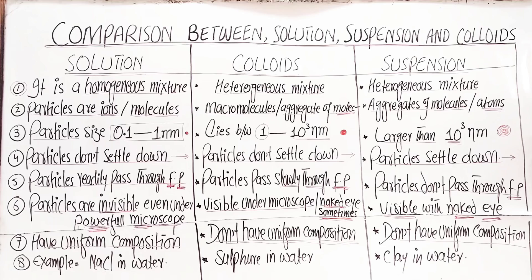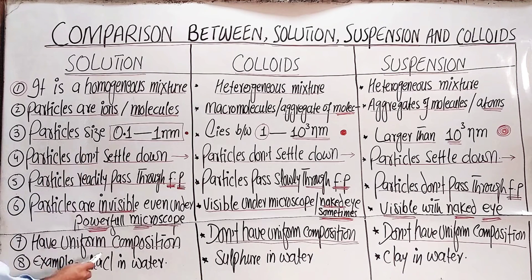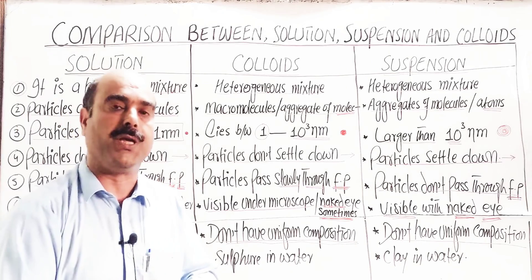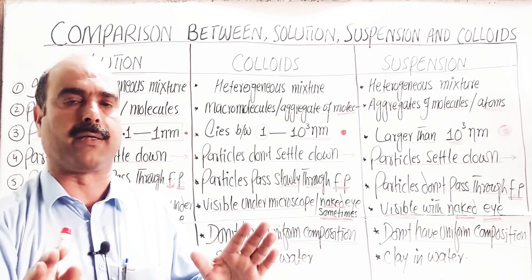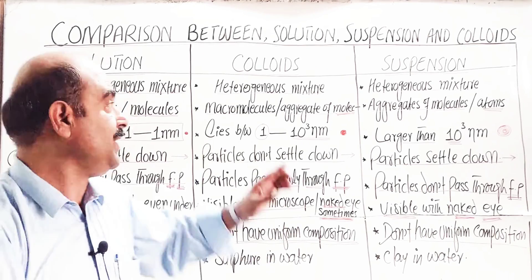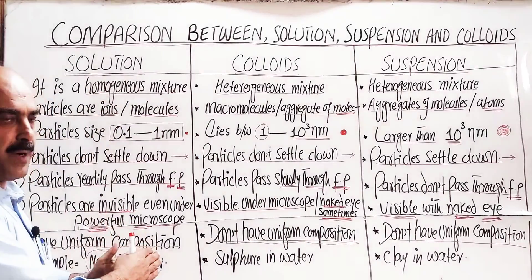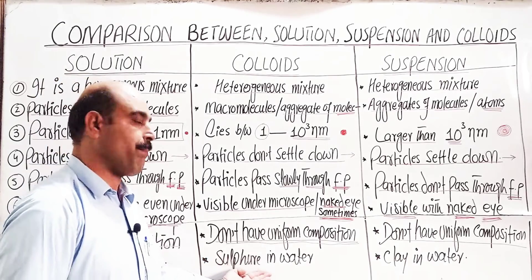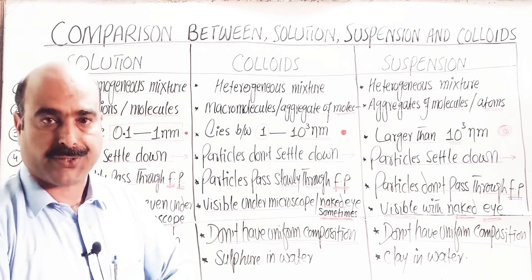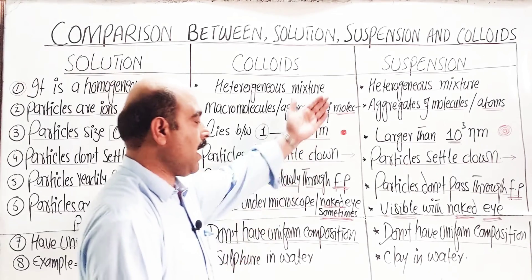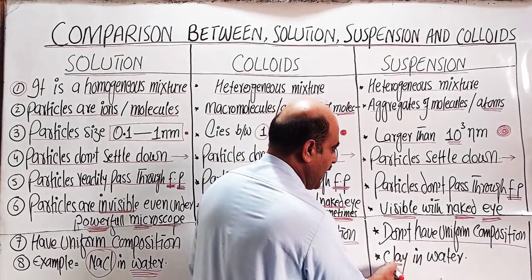Examples: solutions include sodium chloride in water, where sodium ions and chloride ions are evenly distributed, and glucose in water — these are homogeneous mixtures with uniform composition. Examples of colloids include powder sulfur in water, starch in water, gum in water, and blood serum.